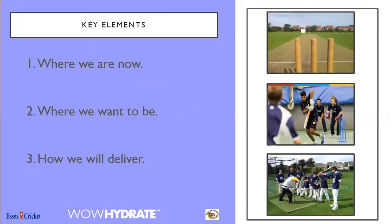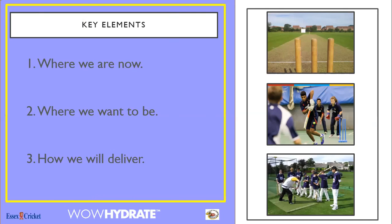If you take away just one slide, I think I could almost stop here because for me it is very simple: have absolute clarity about where we are now, where we want to be, and how we're going to deliver. If you get those three things clear and right, you're going to be well on your way to having a pretty decent plan, whatever it is.